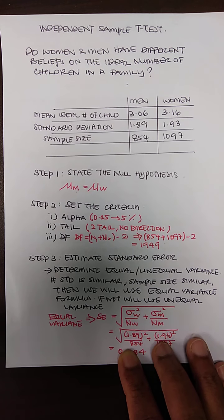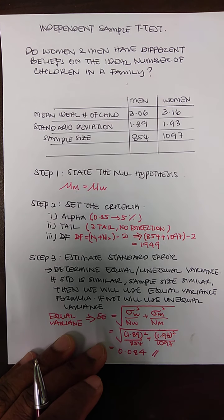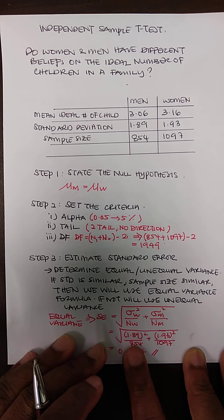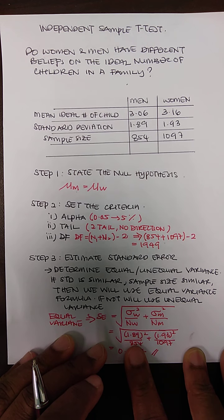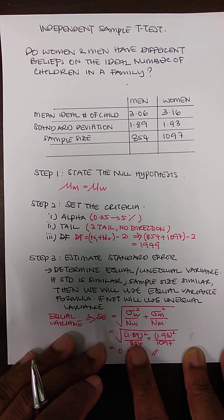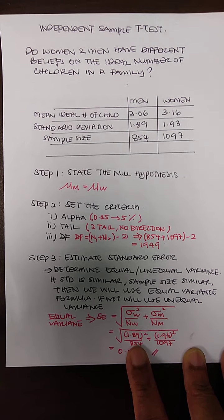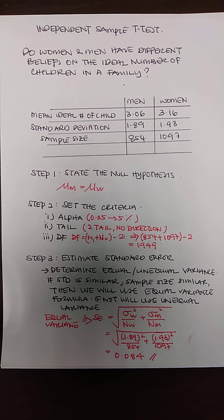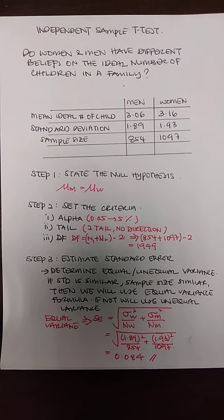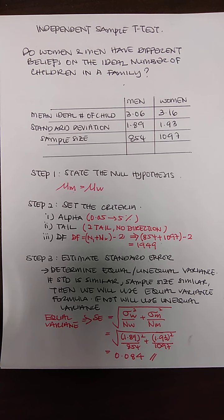Third is to estimate the standard error. When computing the t-statistic, the difference between the two means is divided by the standard error of the mean difference. Since you have two samples, you need to combine them into a single standard error. For the independent sample t-test there are two different formulas: one for equal variance and one for unequal variance.